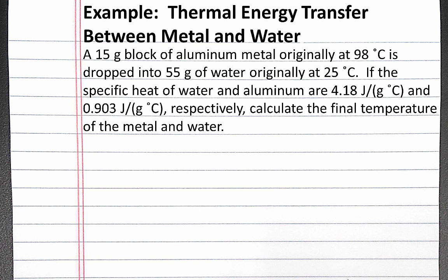Our problem reads: a 15-gram block of aluminum metal originally at 98 degrees Celsius is dropped into 55 grams of water originally at 25 degrees Celsius. If the specific heat of water and aluminum are 4.18 joules per gram degree Celsius and 0.903 joules per gram degree Celsius respectively, calculate the final temperature of the metal and water.